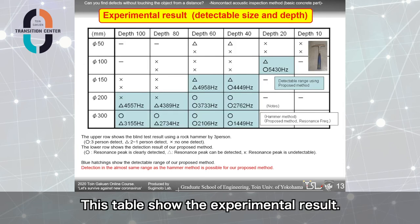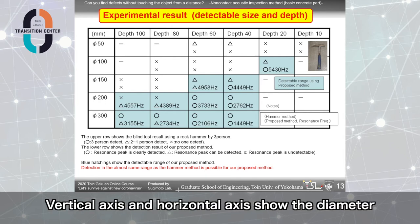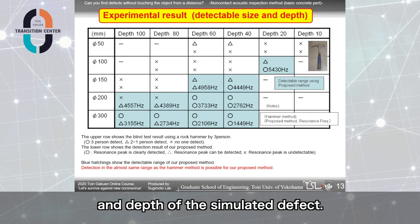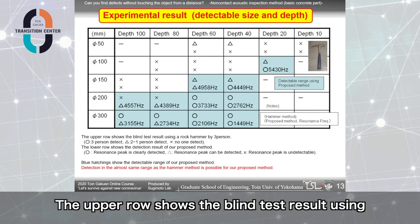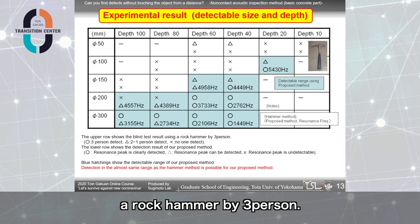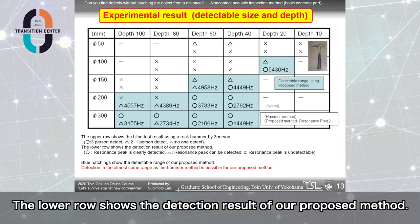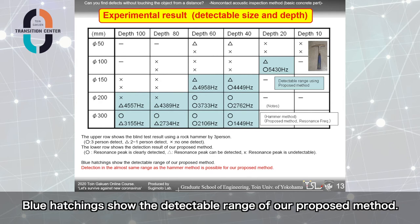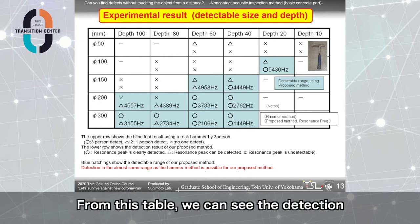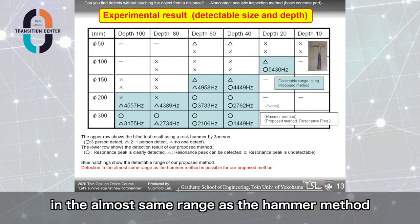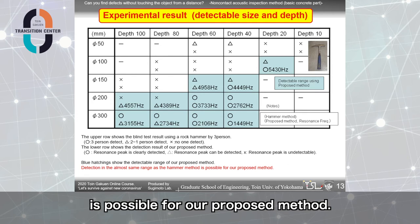This table shows the experimental result. Vertical axis and horizontal axis show the diameter and the depth of the simulated defect. The upper row shows the blind test result using a log hammer by 3 person. The lower row shows the detection result of our proposed method. And blue hatching shows the detectable range of our proposed method. From this table, we can see detection in the almost same range as the hammer method is possible for our proposed method.